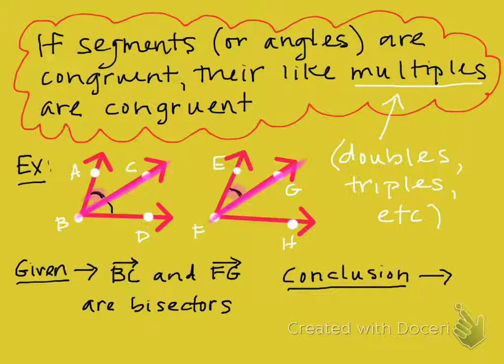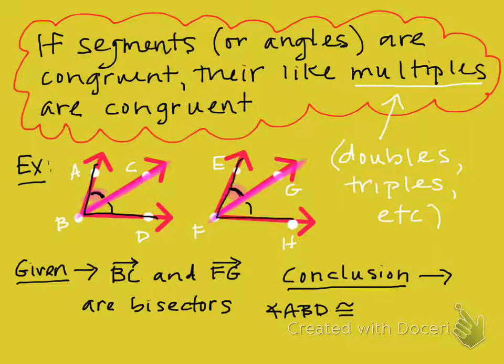Because they're bisectors, we also know that this angle and this angle are congruent. We also know that this angle and this angle are congruent. So because of our theorem, it also says that multiples are congruent. So multiples of angle ABC and multiples of angle EFG are congruent. The multiples would be angle ABD is congruent to this multiple or this double, angle EFH.